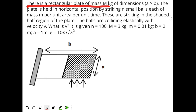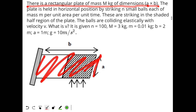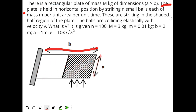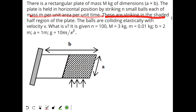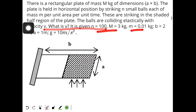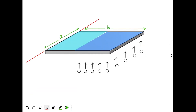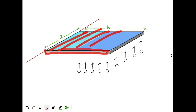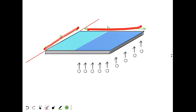We see this question: there is a rectangular plate of mass M kg of dimensions A times B. This is the plate — width A and length B. The plate is held in horizontal position by striking N small balls, each of mass m, per unit area per unit time. I've drawn a 3D diagram because the original diagram is not really clear. The plate is kept horizontally, with width A and length B.